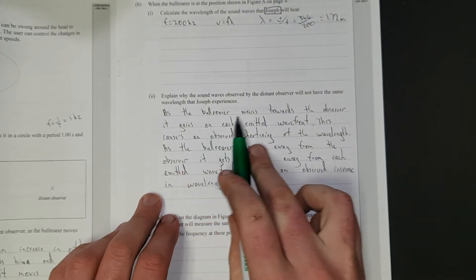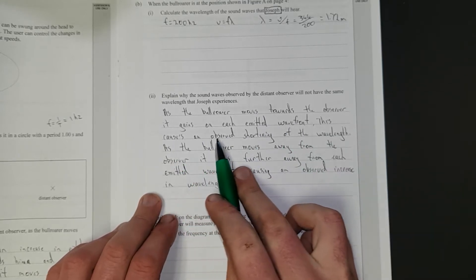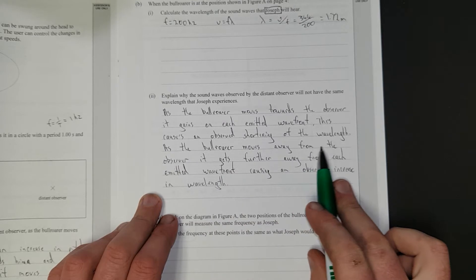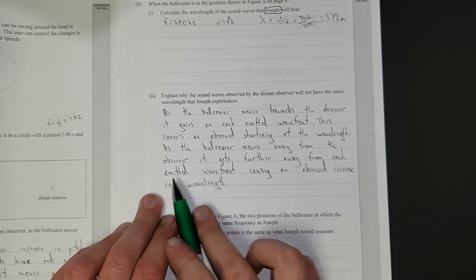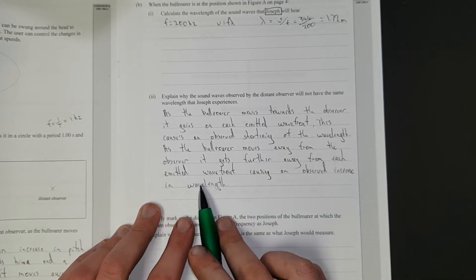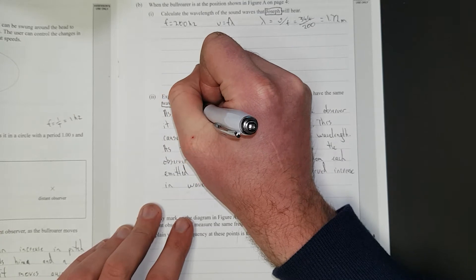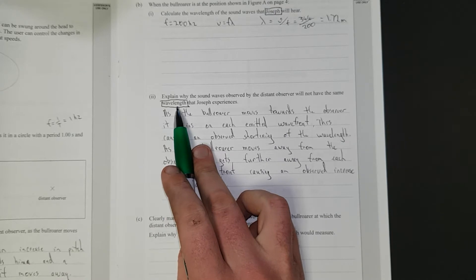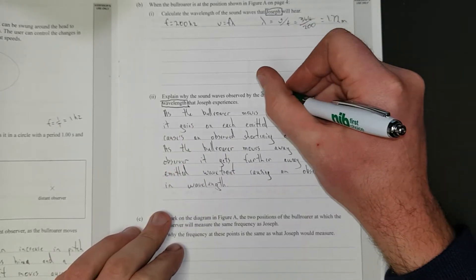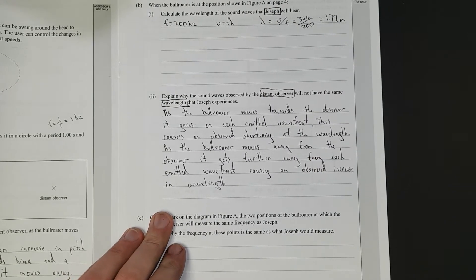As the bullroarer moves towards the observer, it gains on each emitted wave front. This causes an observed shortening of the wavelength. As the bullroarer moves away from the observer, it gets further away from each emitted wave front, causing an observed increase in wavelength. So you had to talk about the wavelength.